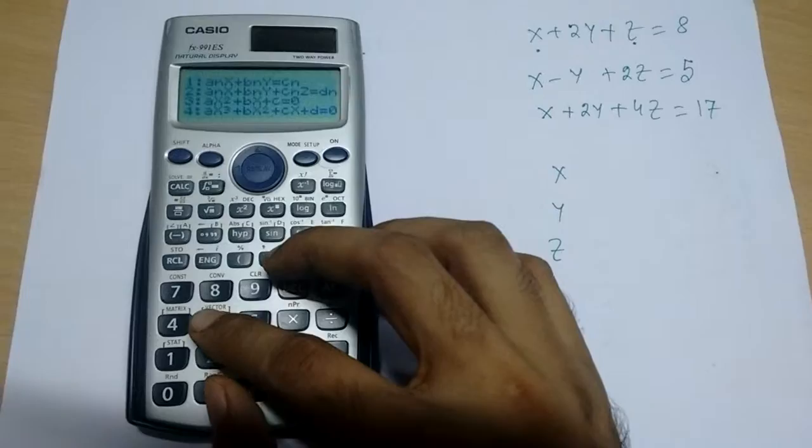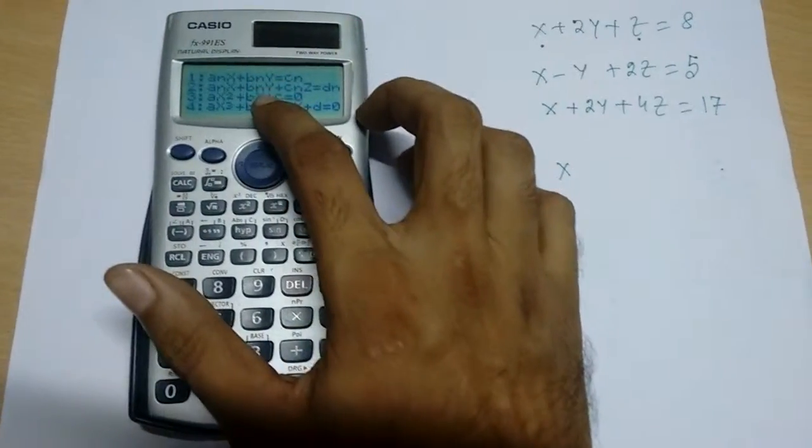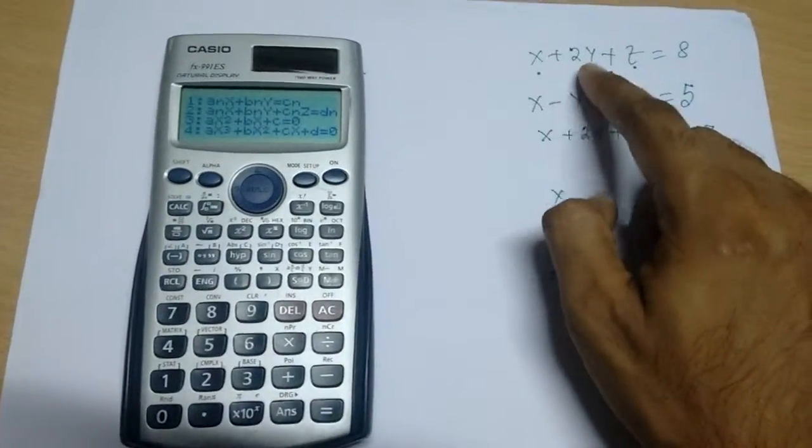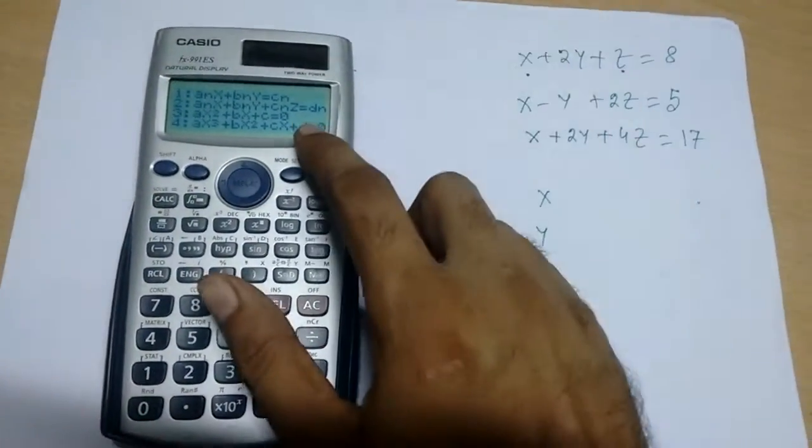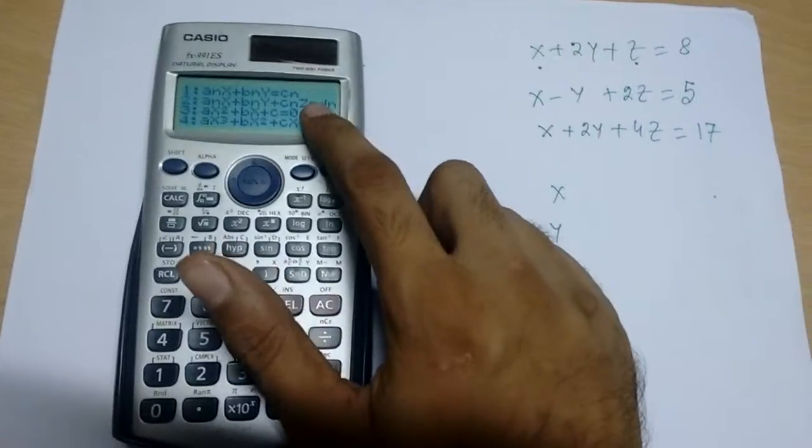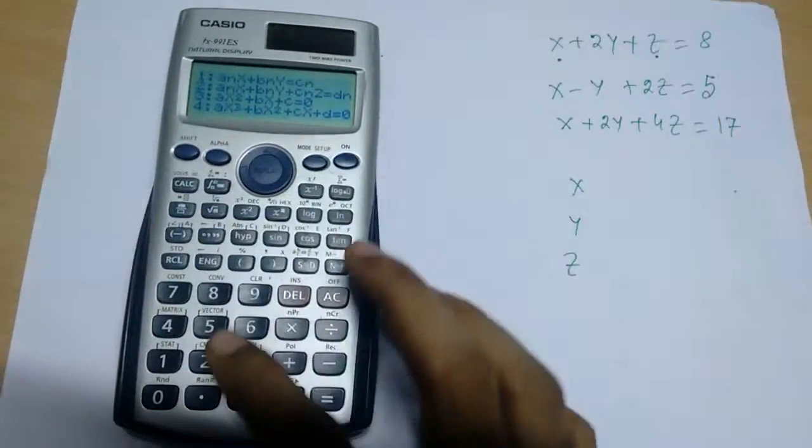Go to equation mode. There are four modes, but in our calculation the structure is x plus 2y plus z equal to 8, so you can see it matches with equation 2, so you press equation 2.